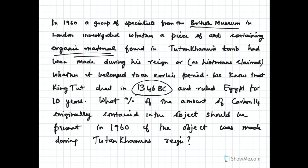The question here is what percentage of the amount of carbon-14 originally contained in the object should be present in 1960, where the investigation was done, if the object was made during Tutankhamun's reign. This is the problem which the British Museum was investigating and let me show you how they used math for developing this.